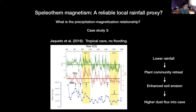The third case study, Jaqueto et al. 2016, is a tropical cave with no flooding. The relationship here is the opposite: higher magnetization corresponds to more enriched C13 values — a shift towards more drought or arid environment suitable plants. They interpreted this to mean that during these drier episodes, there was more soil erosion and therefore higher dust flux into the cave.